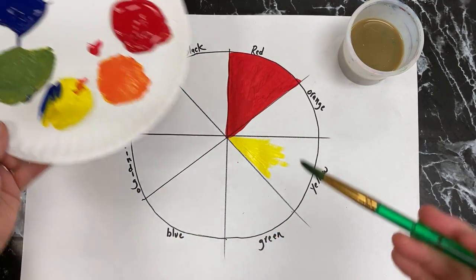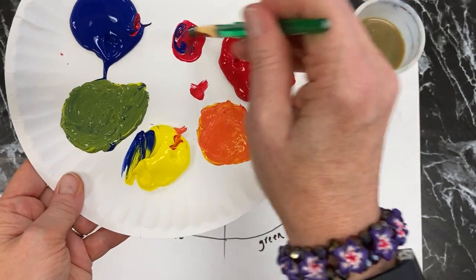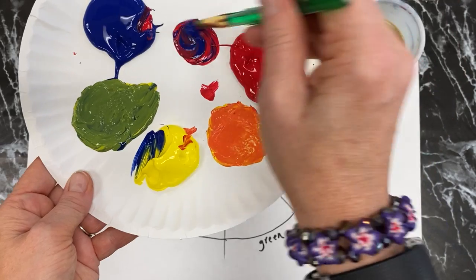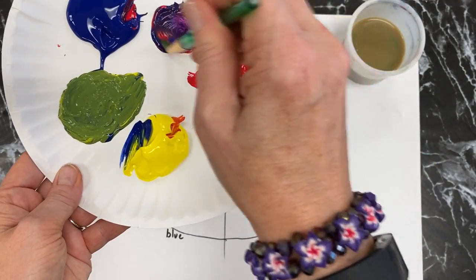And then red and blue makes purple. I recommend equal parts red and blue to get a true purple.